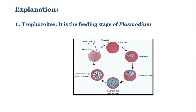Now coming to trophozoite — it is the feeding stage of malaria parasites, so it cannot survive outside the host and it is a non-infective growing stage. This stage, as you can see in the diagram, is part of the plasmodium life cycle within the human host.